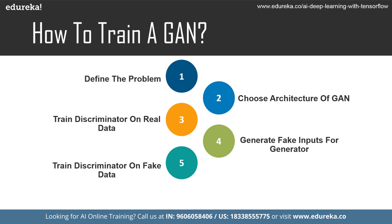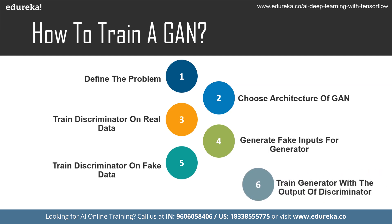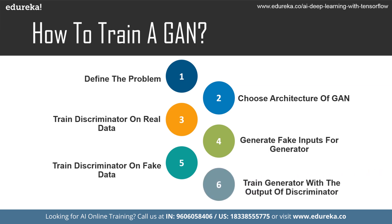The final step is training the generator with the output of the discriminator. After obtaining discriminator predictions, we train the generator to fool the discriminator. That is how we train a GAN to solve our defined problem — the applications section will make this clearer.